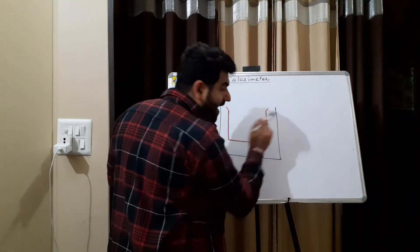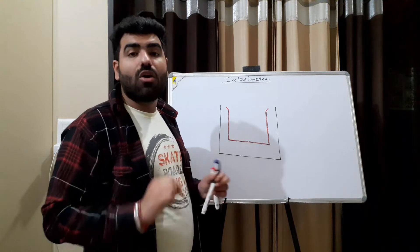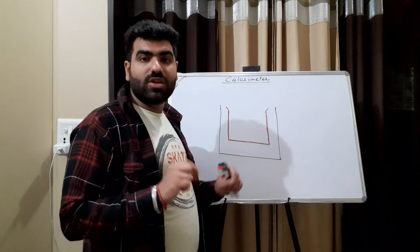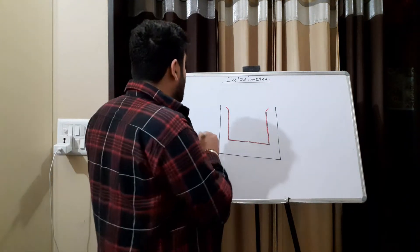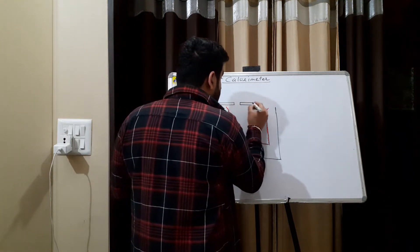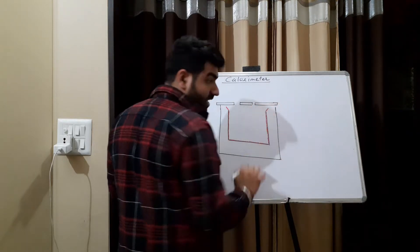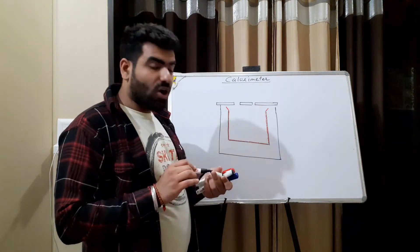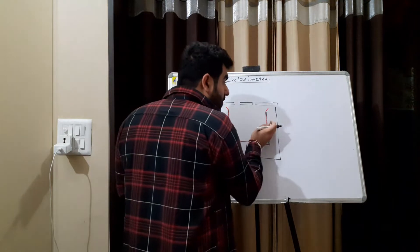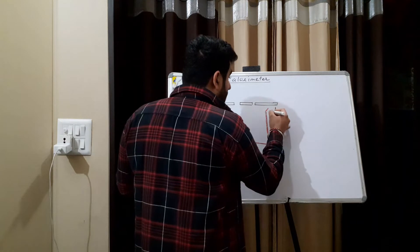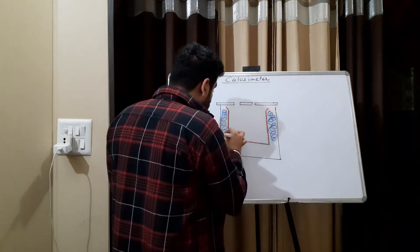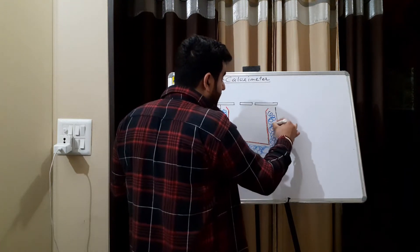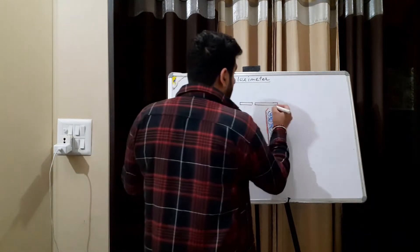These vessels are polished on the inside as well as outside in order to avoid heat loss due to radiation. We have losses in three types: conduction, convection, and radiation. By polishing both sides, we reduce the loss by radiation. On top, there are wooden lids with two pores. The wooden lids help in preventing loss by convection. The copper vessel and the wooden jacket are insulated by wool, cotton, or any other material placed between them to prevent loss by conduction.